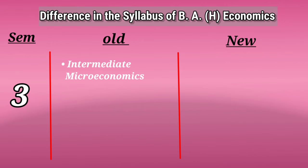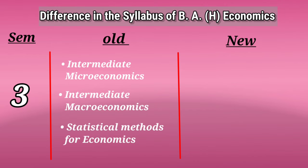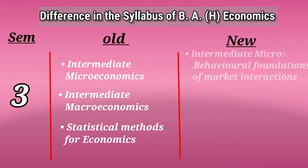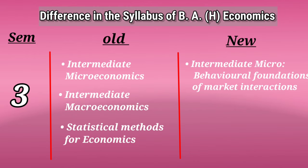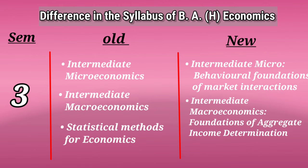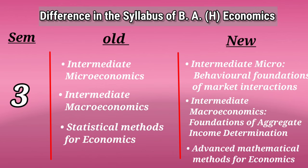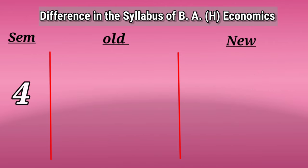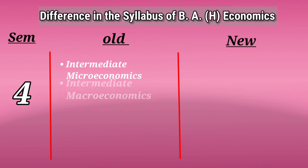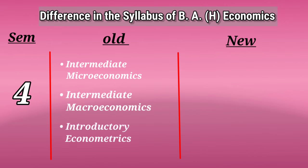In Semester 3, earlier it was Intermediate Microeconomics, Intermediate Macroeconomics, and Statistical Methods for Economics. Now the subjects will be Intermediate Microeconomics, which will specifically include Behavioral Foundations of Market Interactions; Intermediate Macroeconomics, which will include Foundations of Aggregate Income Determination; and Advanced Mathematical Methods for Economics.